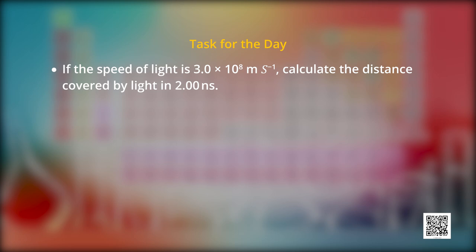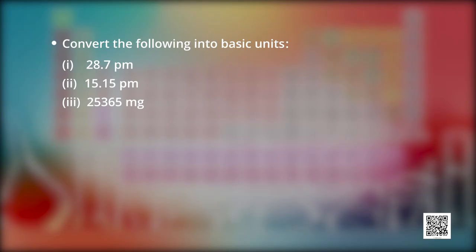Now you can see on the screen, the first question is: if the speed of light is 3 into 10 raised to the power of 8 meter per second, calculate the distance covered by light in 2 nanosecond. Friends, I want to give a hint here. Here you can see, the time is given in nanosecond. First of all, you will convert it into SI unit, and then you will use that in calculation of the distance. In the second question, convert the following into basic units: 28.7 picometer, 15.15 picometer and 25365 milligram into its basic units.